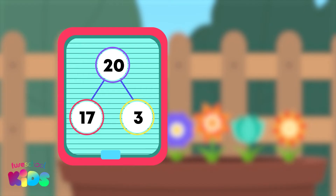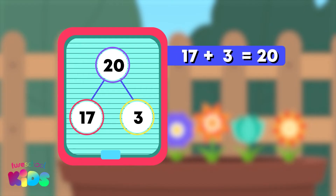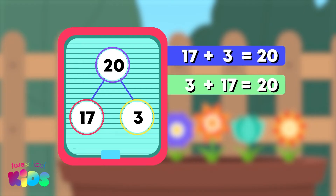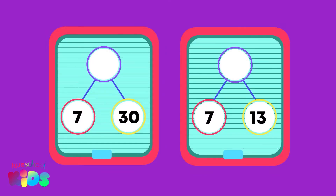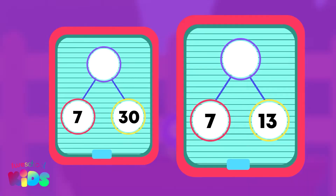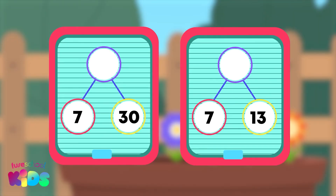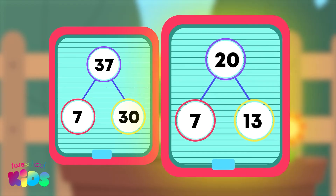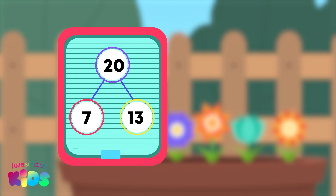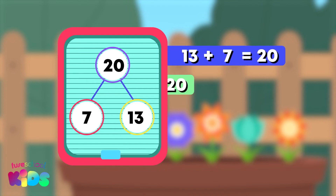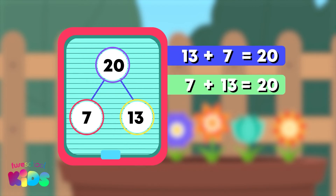Great work. 17 plus 3 and 3 plus 17 equals 20. Which of these is also a number bond to 20? 7 and 30, or 7 and 13? 30 and 7 equals 37, so it must be 13 and 7. Good spotting. 13 plus 7 and 7 plus 13 are equal to 20.